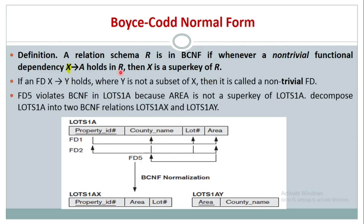Going back to the definition: whenever a non-trivial functional dependency X determines A holds in R, then X should be the super key of R. In FD1, property ID determines county name, lot number, and area. Here property ID is a primary key, so FD1 satisfies BCNF.